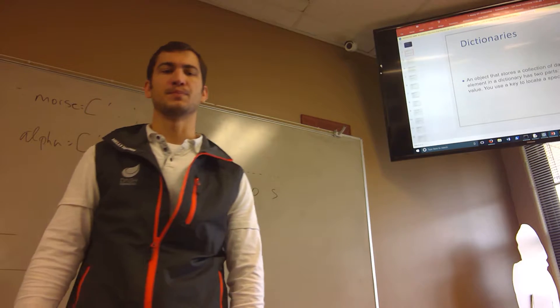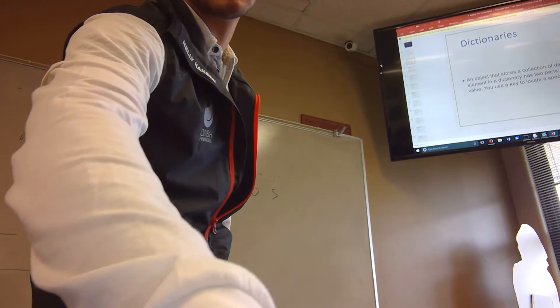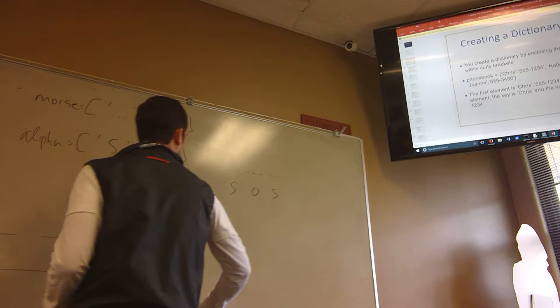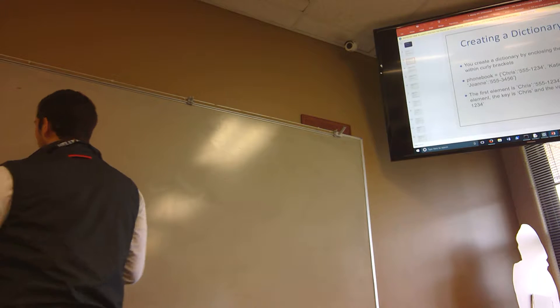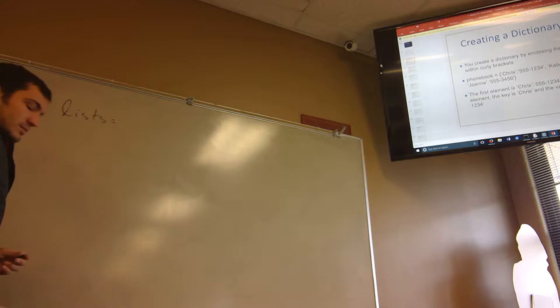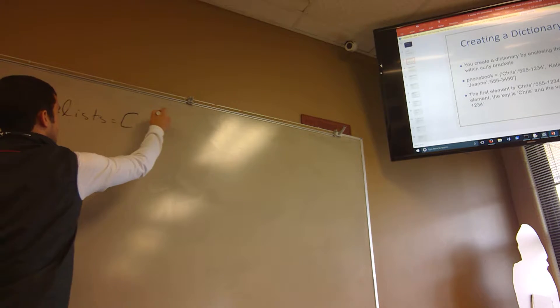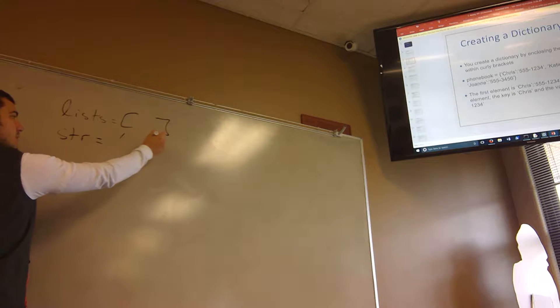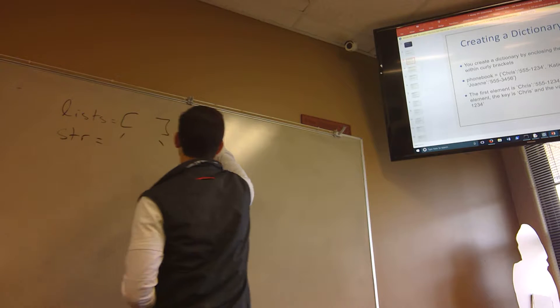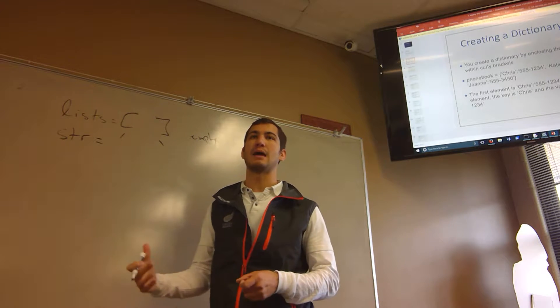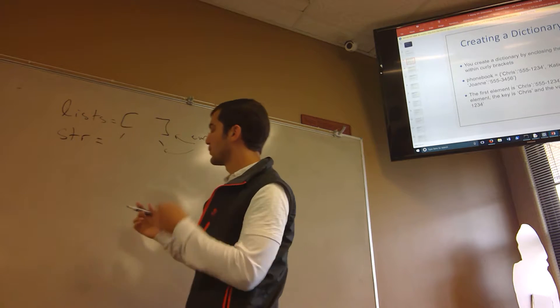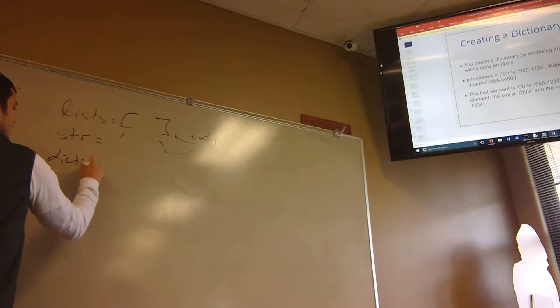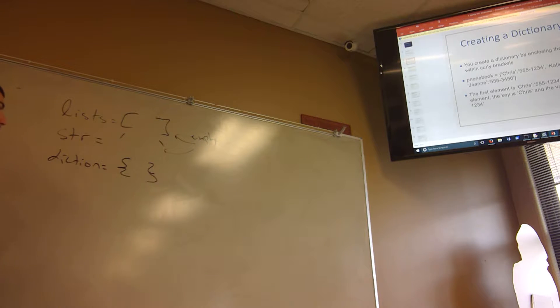Next thing: dictionaries. So creating a dictionary. For lists, how do I create a list? Brackets. Strings? Quotes. So just so you know, these are empty. When I talk about an empty list or an empty string or an empty dictionary, this is what I mean. There's nothing in there. With dictionaries, they're curly brackets.